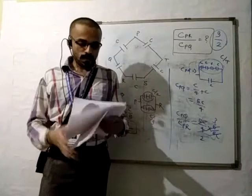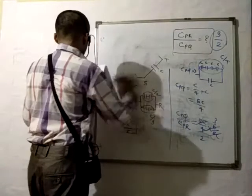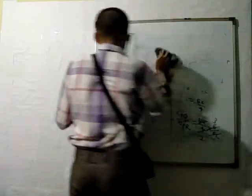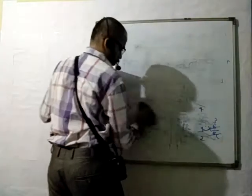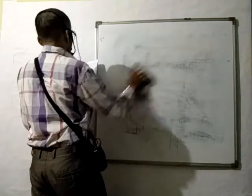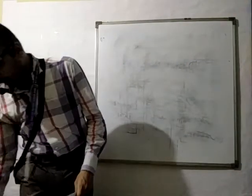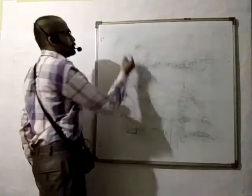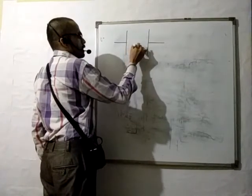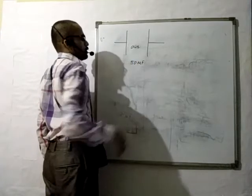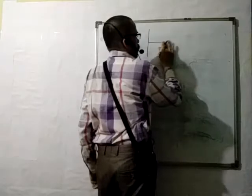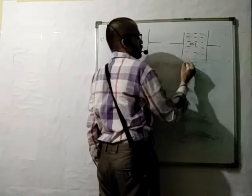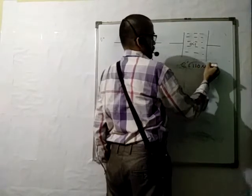Now let's go for question number 9. A parallel plate capacitor has a capacitance of 50 microfarad in air and 110 microfarad when immersed in oil. We need to find the dielectric constant of the oil. The capacitance in oil, C', is equal to 110 microfarad.